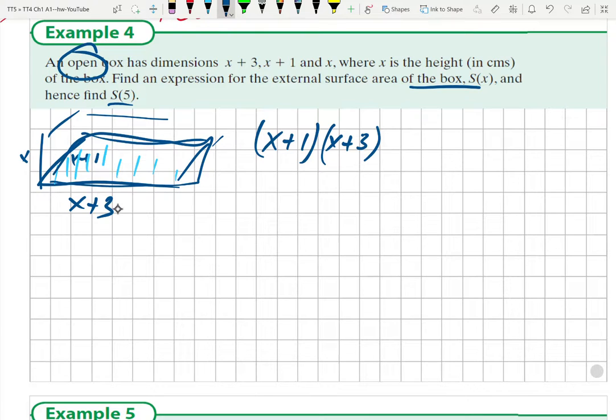That's a half perimeter. If we want to double it, we multiply it by the height. So we have x squared plus 4x plus 3.